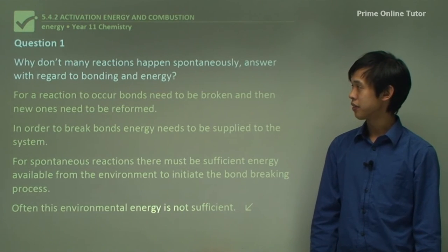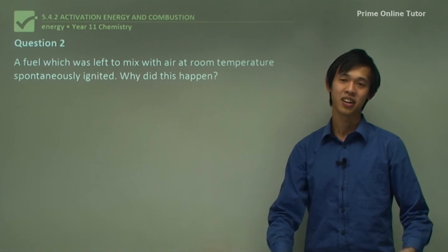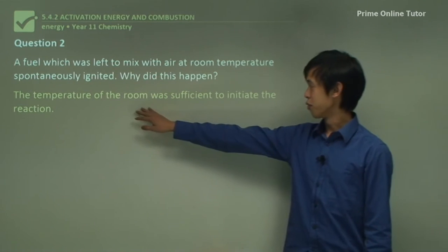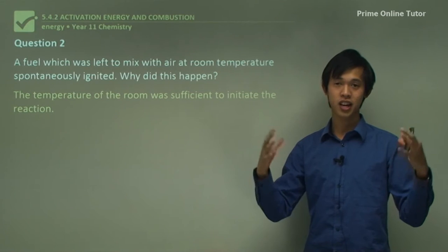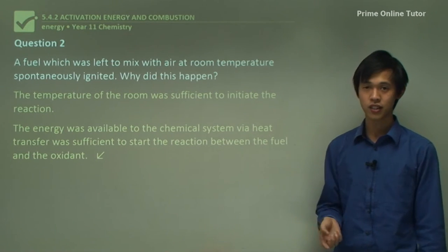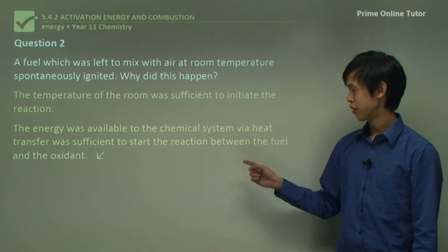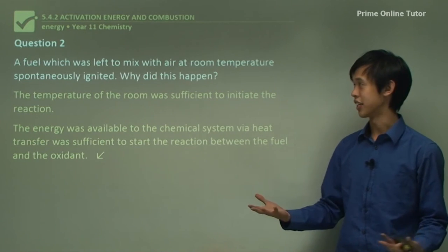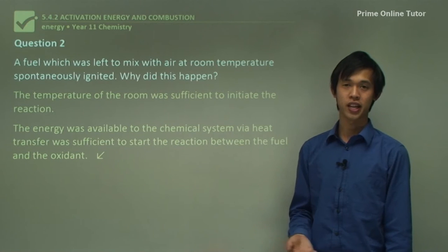Question two: a fuel which was left to mix with air at room temperature spontaneously ignited. Why did this happen? The temperature of the room was sufficient to initiate the reaction. This is a real-life situation where you have enough fuel and air and the temperature is high enough that the fuel actually ignited. The energy available to the chemical system via heat transfer — the temperature of the air — was sufficient to start the reaction between the fuel and oxidant. The fuel and oxidant mixed, the temperature was high enough to get those bonds breaking, and then you got ignition of the fuel.